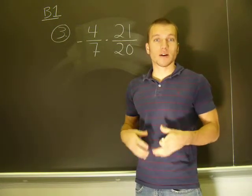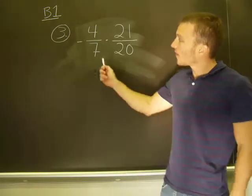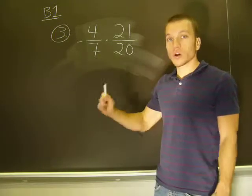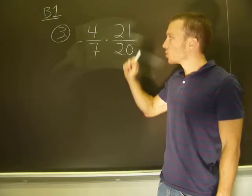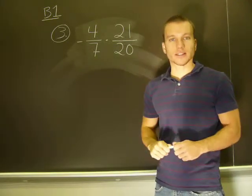However, if I can simplify these, I want to simplify. That is, if I can find a common factor between 4 and any of the denominators, I can simplify. Or a common factor between 21 and any of the denominators, I can simplify.